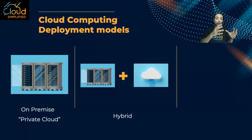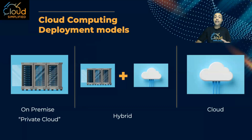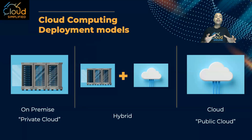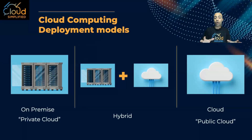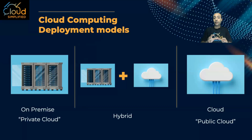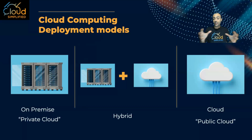If you're doing migration, you will end up — after migrating all your applications and workloads — in what we call the cloud, or another term called the public cloud. Public cloud means you now have all your applications and all of your workloads completely running on the public cloud and you have decommissioned your data center completely. One scenario that can lead you to the public cloud is by migrating from the physical on-premise to the public cloud.